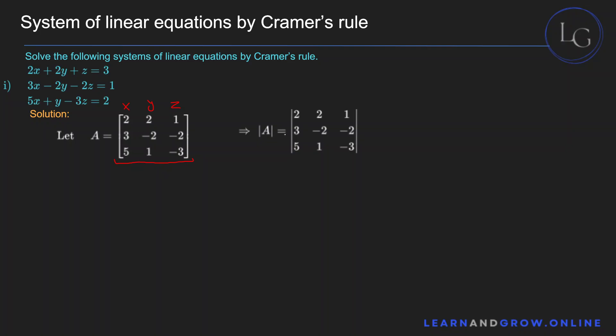First, you'll have to find the determinant of matrix A, and you'll do that by multiplying the three elements of the first row with their respective cofactors. To find the cofactors, you'll first find the minor of the element — you'll delete the column it's in and the row it's in, and then take the determinant of the remaining elements.